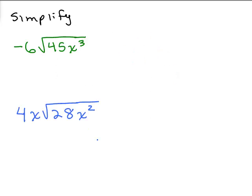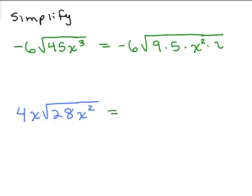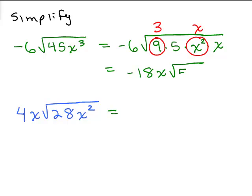Try these two practice problems by putting the video on pause. For the first one, 45 has a perfect square factor of 9, so write it as 9 times 5. x cubed is odd, so write that as x squared times x. Pull out a 3 from the square root of 9 and an x from the square root of x squared. Multiplying out by what's out in front gives negative 18x in front of the square root, with 5x underneath.